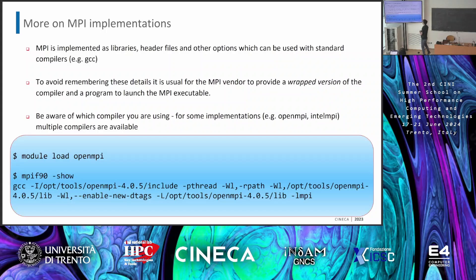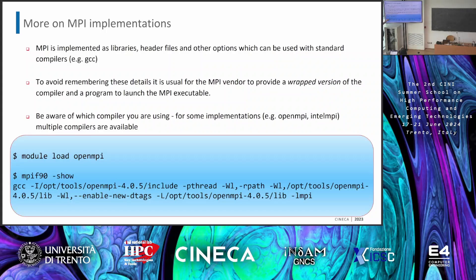MPI is implemented as libraries and header files — it is not a programming language, it is a programming paradigm. There are APIs, interfaces, and libraries you can add to your existing serial code. For example, if you load the OpenMPI module inside Cineca clusters, it gives you the possibility to have a suite of compilers that can compile parallel jobs. One of them is mpifort (for Fortran). If you type mpifort with the --showme option, you can see what is behind this alias — essentially gfortran with headers and libraries that say 'compile this with MPI.'